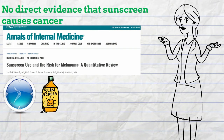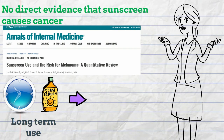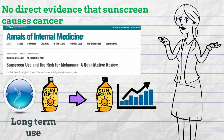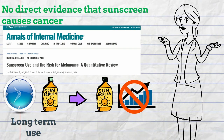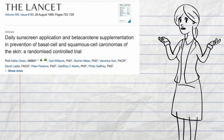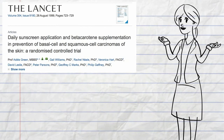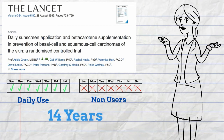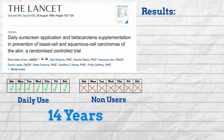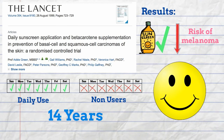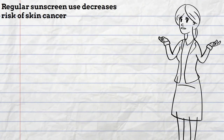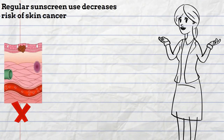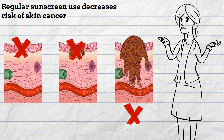In a review conducted by Dennis and colleagues, they looked at long-term sunscreen use and concluded that using sunscreen does not increase the risk of skin cancer. Another study by Green et al. followed daily sunscreen users and non-sunscreen users for 14 years and found that those who use sunscreen daily had a decreased risk of melanoma.